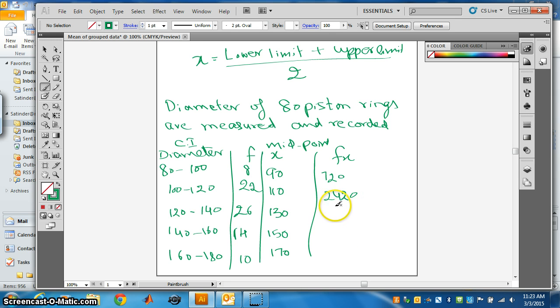Next one 3380. Multiply this and this. Next one, 14 into 150 is 2100. And the last one, 17 into 10 is 1700.